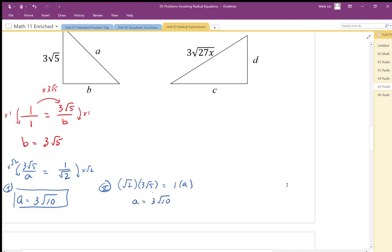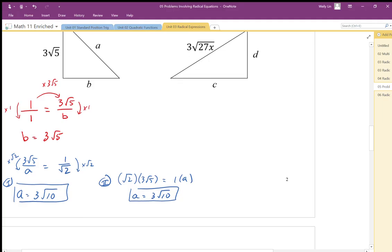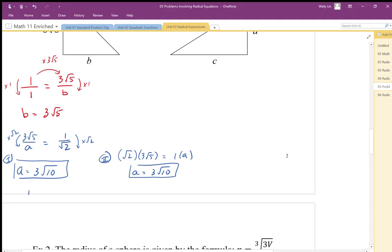A third method you could use in this case would be just use Pythagoras. We can say that 3 root 5 squared plus 3 root 5 squared is equal to A squared. So we end up with 9 times 5 plus 9 times 5 equals A squared. This works out to be 45 plus 45.